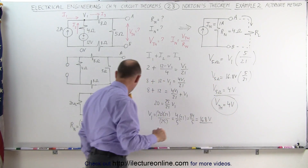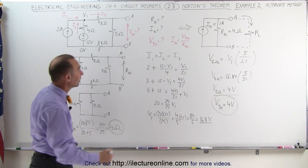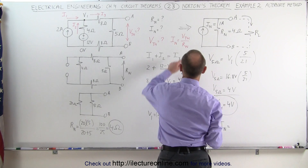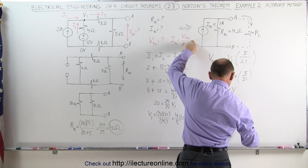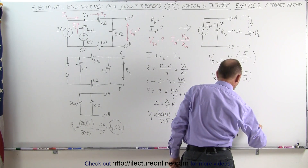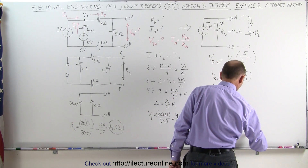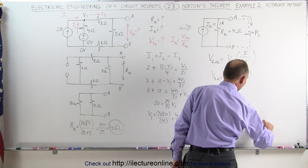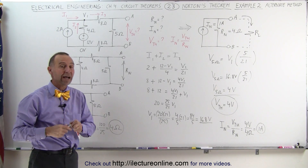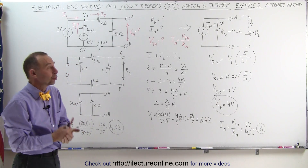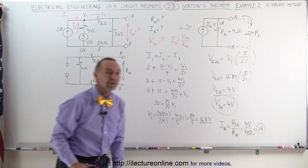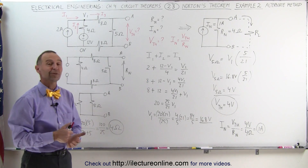Now that we have the Thevenin voltage and the Thevenin or Norton resistance, we can go back to our equation: the Norton current equals the Thevenin voltage divided by the Norton resistance, which equals 4 volts divided by 4 ohms, which is equal to 1 amp. That's the same answer we got in the previous example. So there's another method in which you can find the equivalent Norton current by simply finding the Thevenin voltage and dividing it by the Norton resistance.